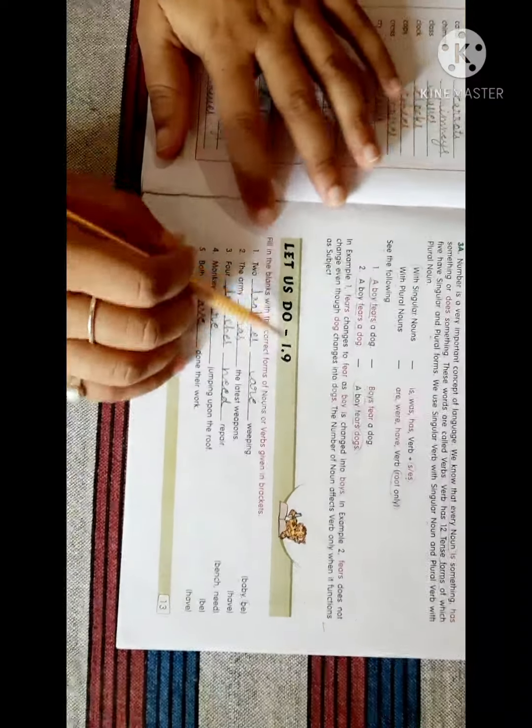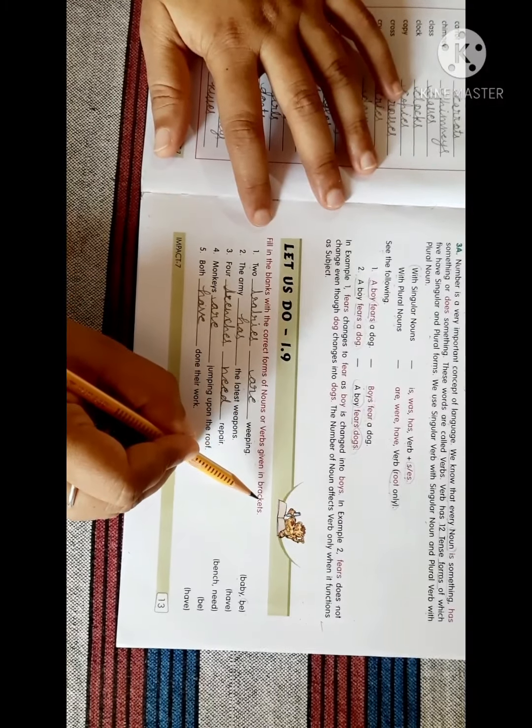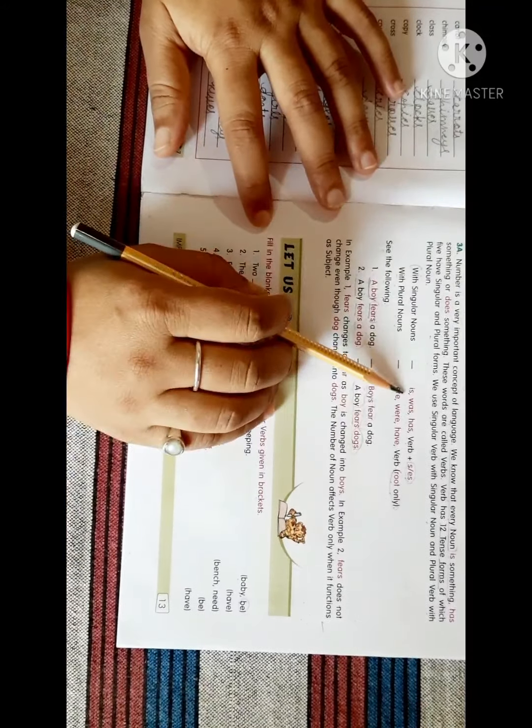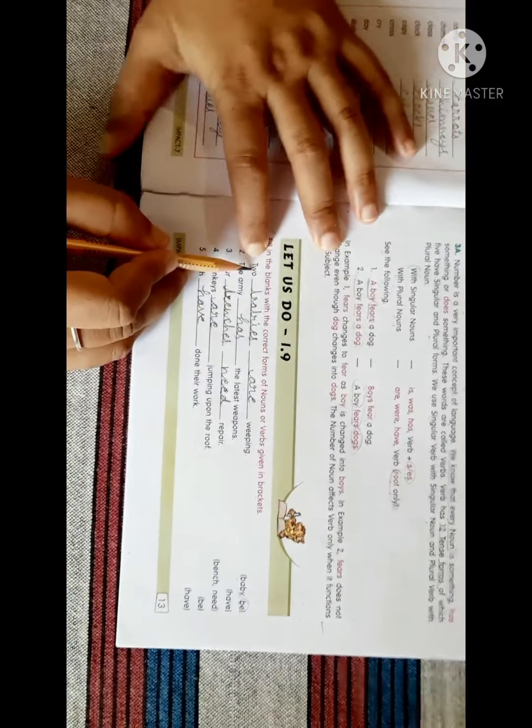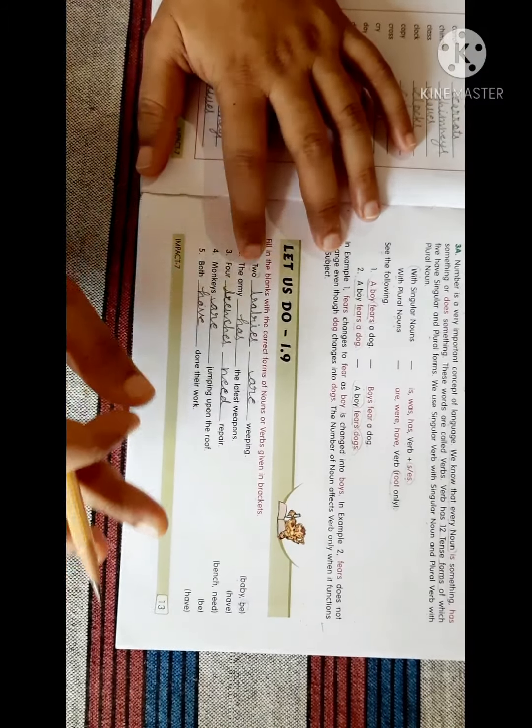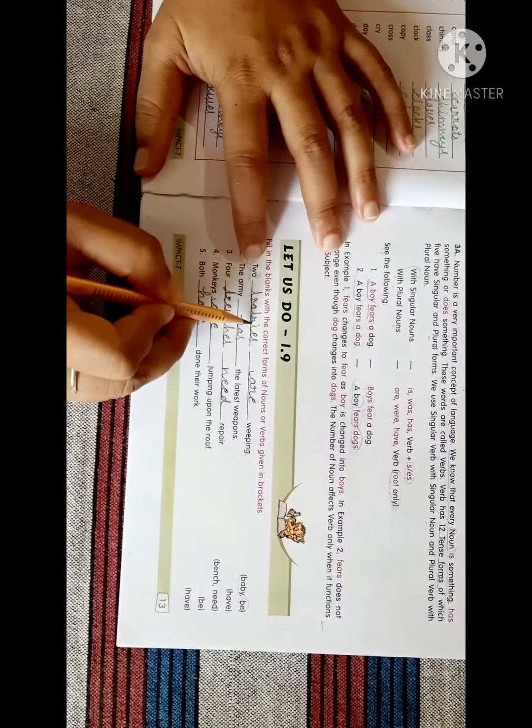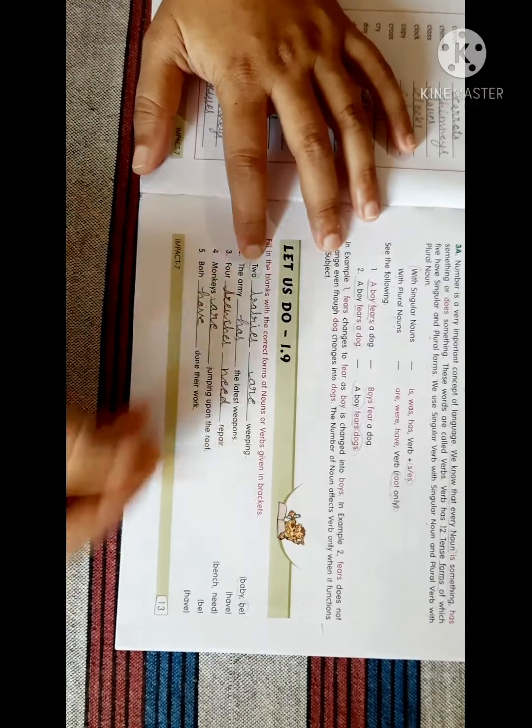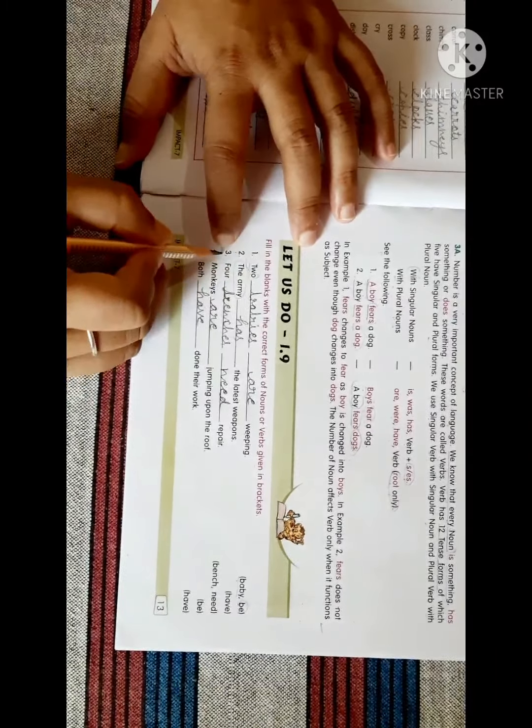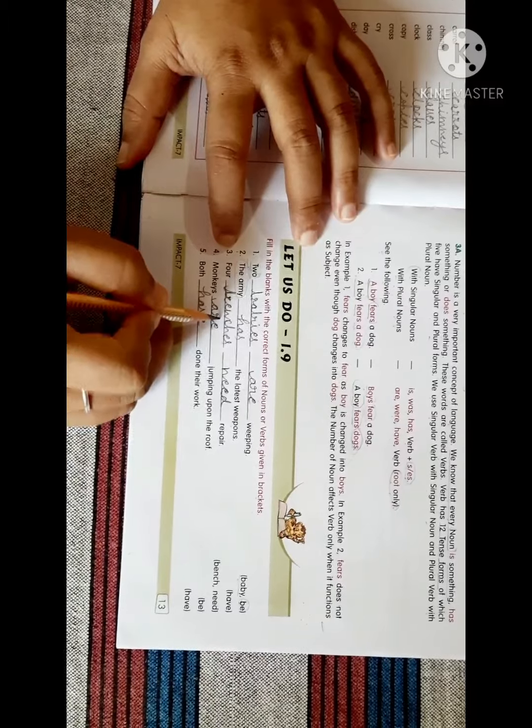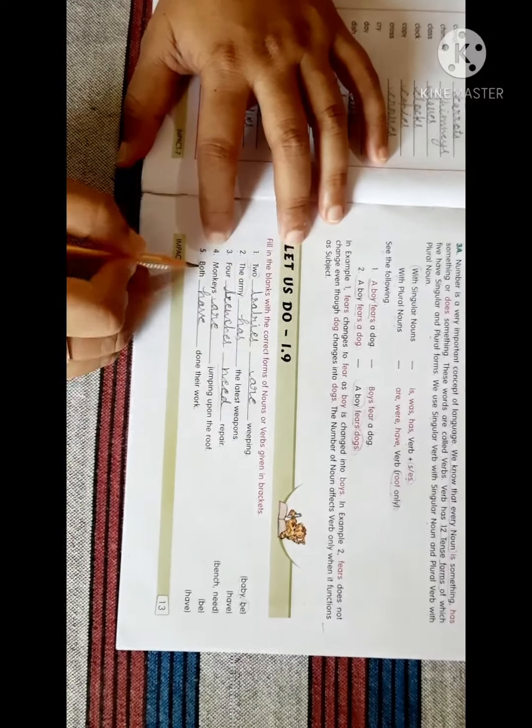Now come to the exercise. Let us do 1.9: Fill in the blanks with the correct forms of nouns or verbs given in brackets. Two babies are weeping. The army has the latest weapons. Four benches need repair. The monkeys are jumping up on the roof. Both have done their work.